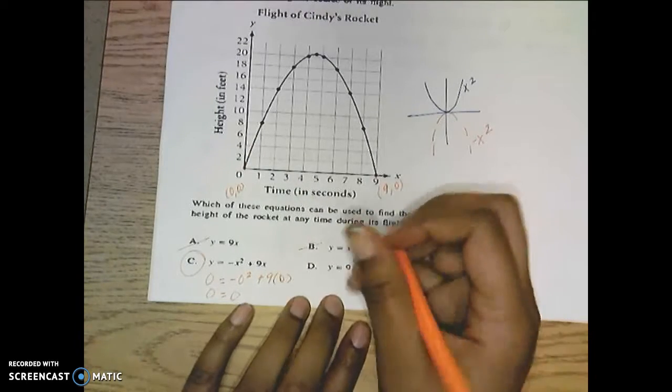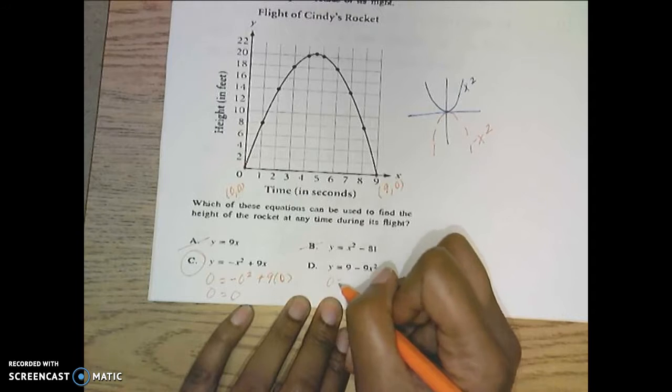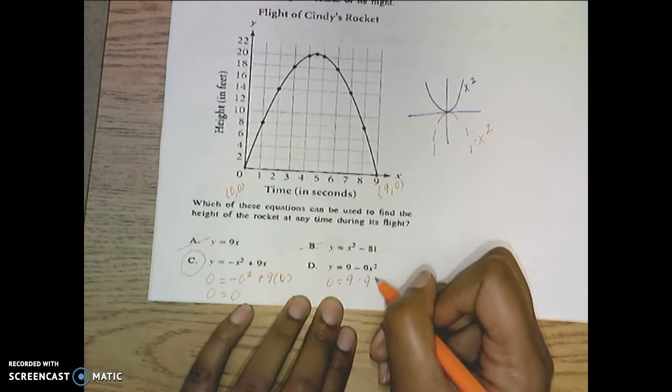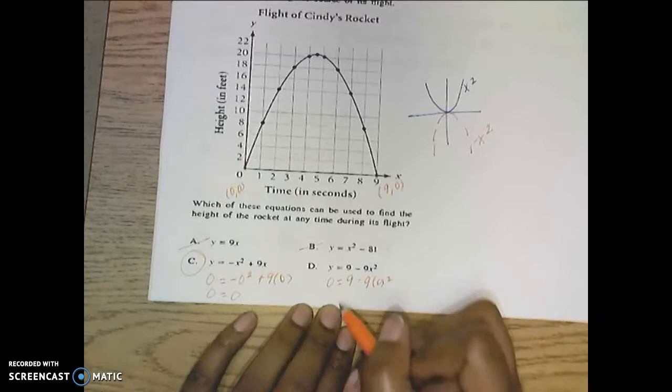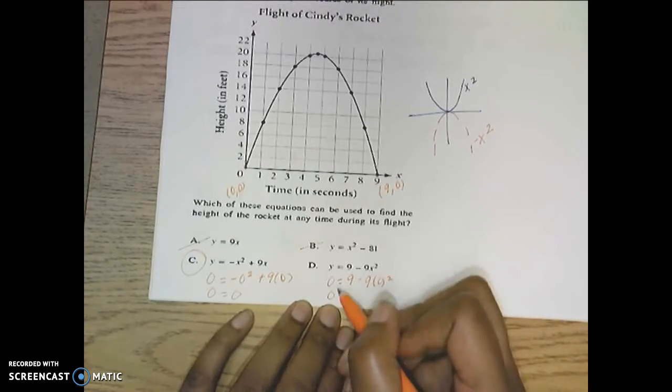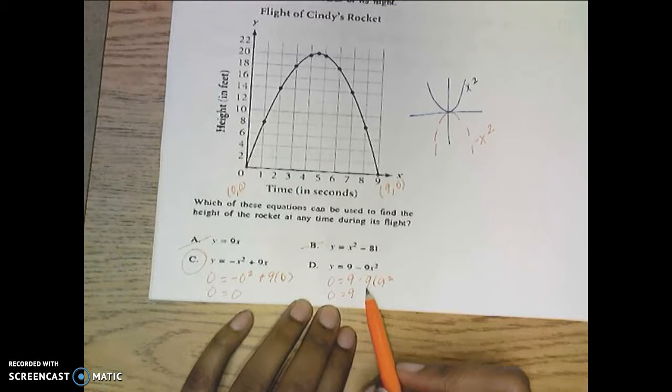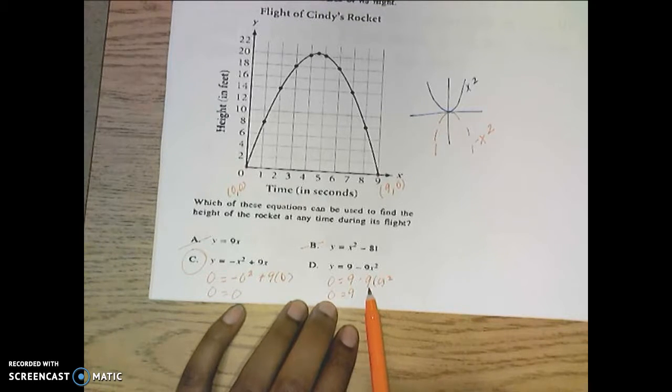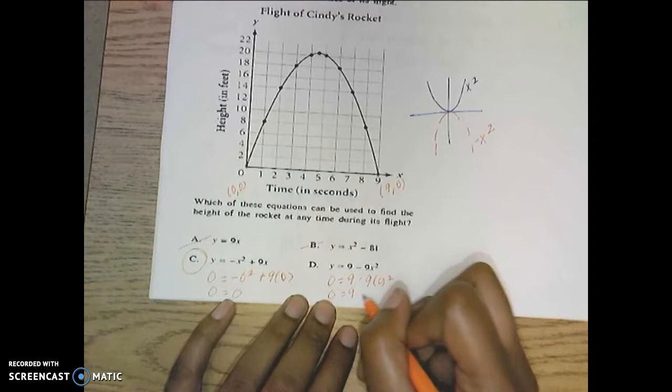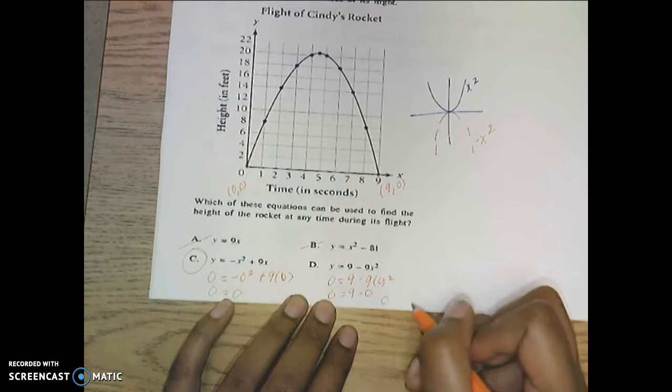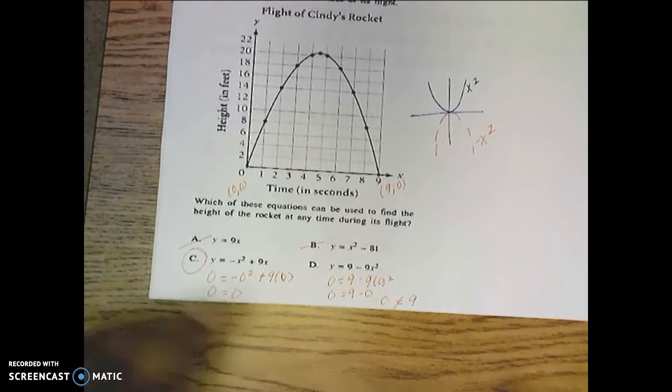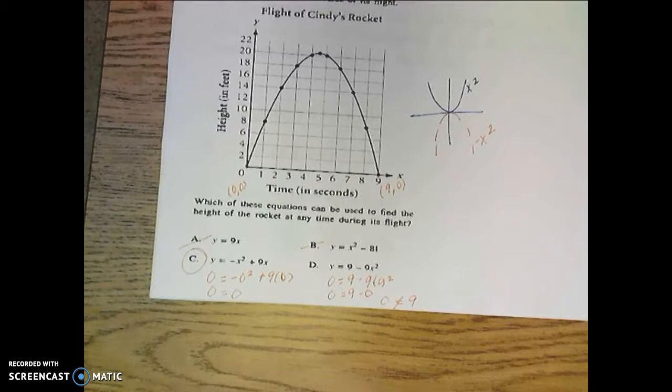Now just as a formality, I can substitute in a 0 for y over here on the answer choice D. And now we get 0 is equal to 9 because this part right here, 0 squared is 0 again, and 0 times 9 is 0. So that would be 9 minus 0. And this is saying that 0 is equal to 9, which is not true. So for that reason alone, C is our final answer.